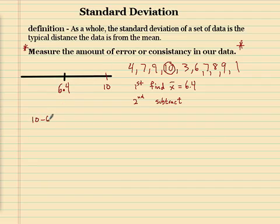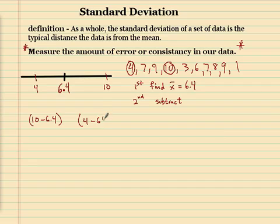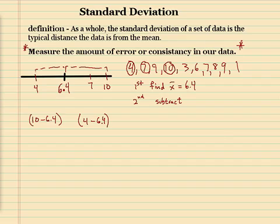So I have to subtract these — so 10 minus 6.4. Ideally, we'd want to find all these distances. Here's 4 over here; we would do 4 minus 6.4 and find that distance. Here would be 7, probably a little closer to the mean, so 7 minus 6.4. Ideally, what we'd want to do is find an average of all these distances.